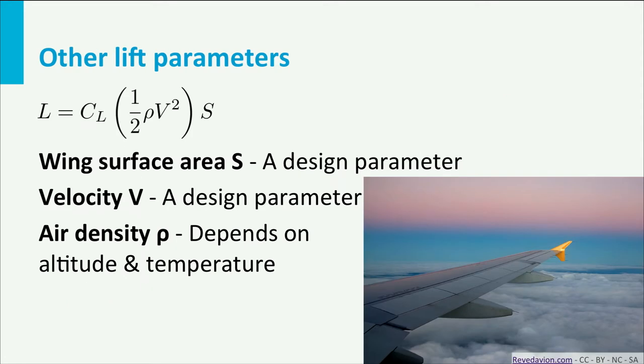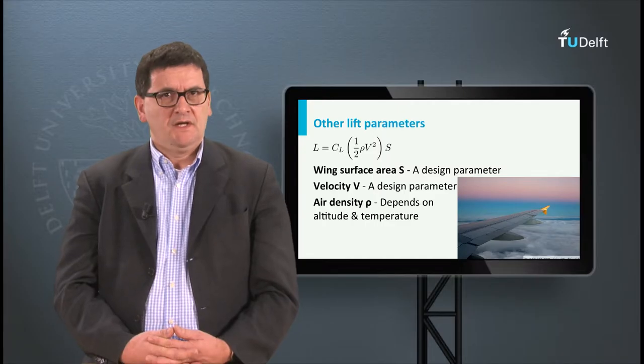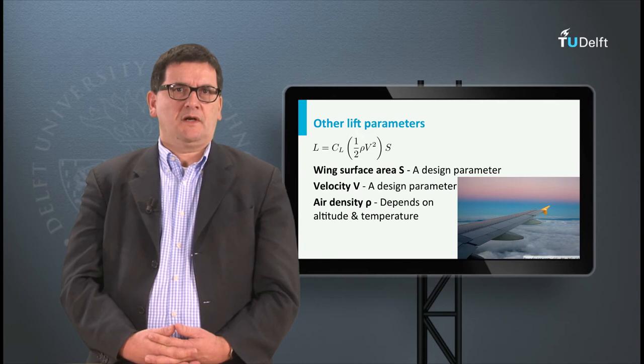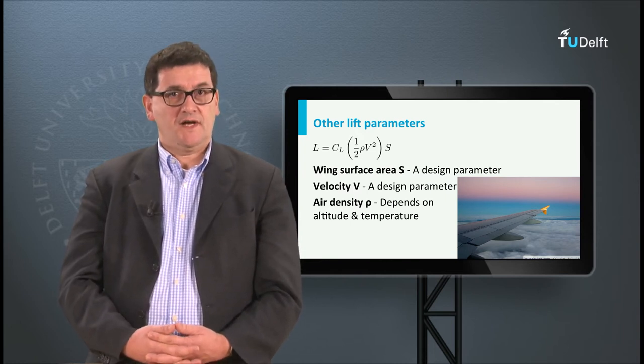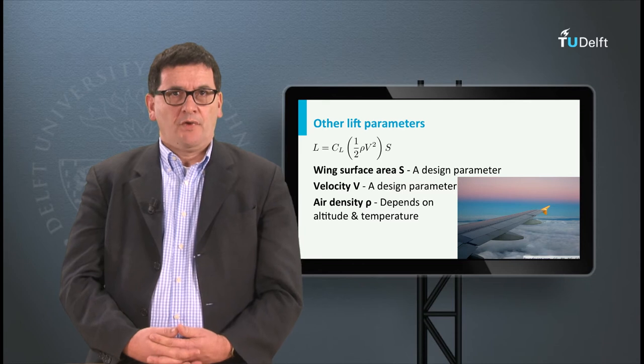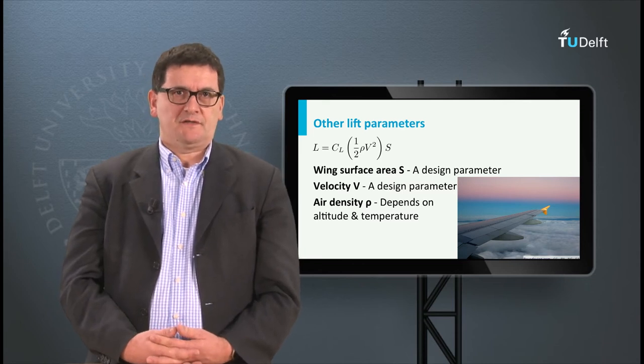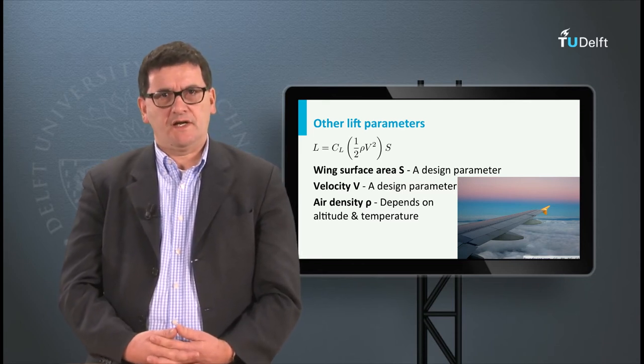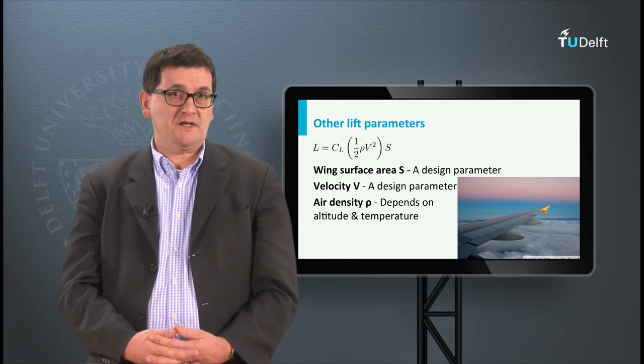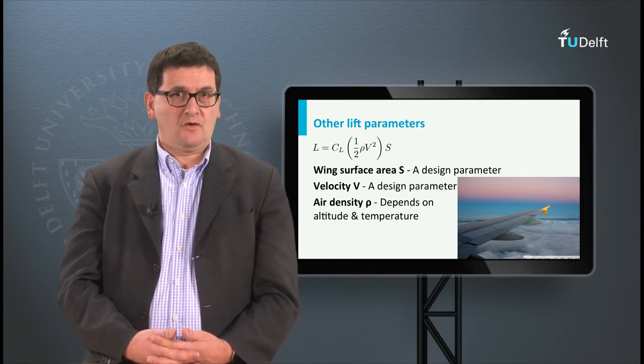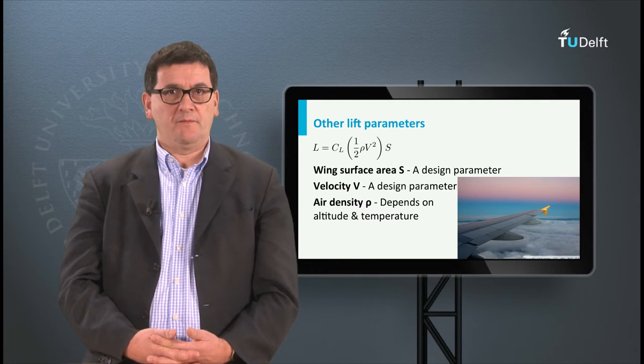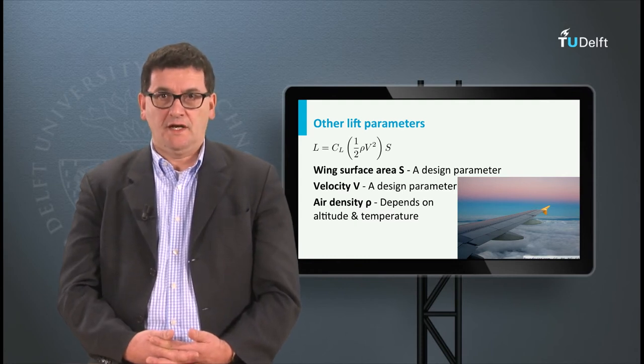Let us return to the formula for lift. The other parameters in the formula are the wing surface area and the velocity or airspeed. Both are typical design parameters. During the design of an aircraft you need to optimize these values with many others in order to obtain the best ratios between performance, weight and costs.